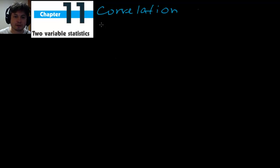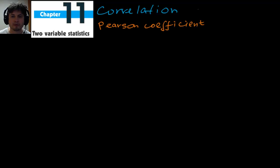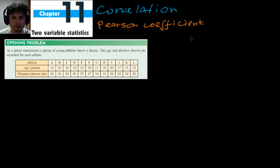Hello YouTube and welcome to 'What the Math.' Today we're doing Math Studies Chapter 11: Two Variable Statistics. This is essentially statistics when you have two different things happening at once. We're going to be focusing on two things: the idea of correlation, and measuring correlation using what we call the Pearson coefficient. Correlation and Pearson coefficient are the topics for today — one is the idea, and one is how to measure it.